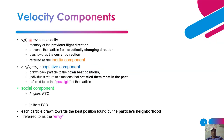Now let us see the PSO parameters. The velocity components are: inertia component, cognitive component, and social component. V_j(t) is the previous velocity — memory of the previous flight direction. It prevents the particle from drastically changing direction and biases towards the current direction — this is the inertia component. The term c1·r1·(y_i − x_i) is the cognitive component — it draws particles back to their own best position. This has been referred to as the 'nostalgia' of the particle.